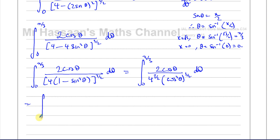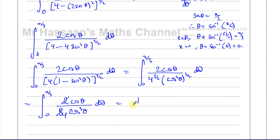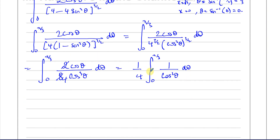Continuing to simplify: the denominator is 4^(3/2) times (cos²θ)^(3/2). Now 4^(3/2) = (√4)³ = 2³ = 8, and (cos²θ)^(3/2) = cos³θ. So the integrand is 2cosθ over 8cos³θ dθ. The 2 over 8 gives 1/4, and cosθ cancels with cos³θ leaving cos²θ in the denominator. So we get (1/4)∫sec²θ dθ from 0 to π/3, since 1/cos²θ = sec²θ.